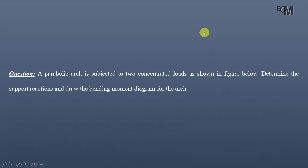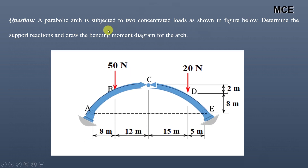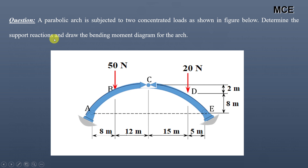Hello and welcome back to the Master Cell Engineering. In this video you will learn how to find the support reactions and how to draw the bending moment diagram for a parabolic three-hinged arch. We have been given a question which states that a parabolic arch is subjected to two concentrated loads as shown in the figure below. We have to determine the support reactions and also draw the bending moment diagram for this arch.